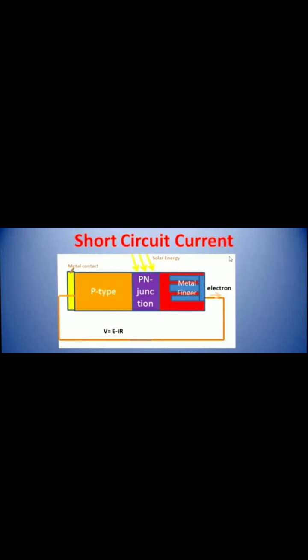So the electric current flows from the P side to the N side. Due to this process we can store the power of the solar energy, and as per our requirement, if we connect a bulb or fan in between the connecting wire, they will also draw some current and work properly. That's why the IV characteristics curve of the P-N junction solar diode shows the open circuit voltage V_OC and the short circuit current I_SC. The power of the solar cell is equal to the product of voltage and current.